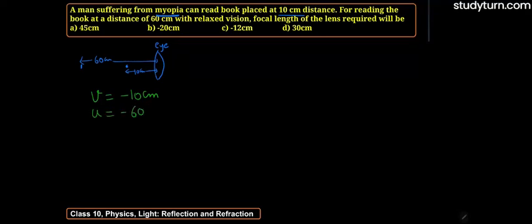Similarly, u equals minus 60, also on the left side. We use the lens formula: 1/f = 1/v - 1/u.